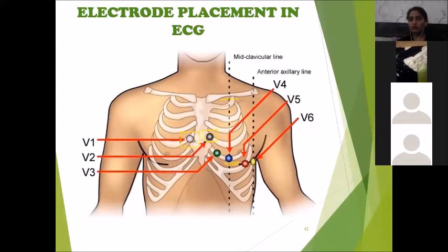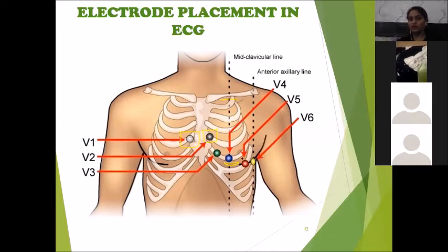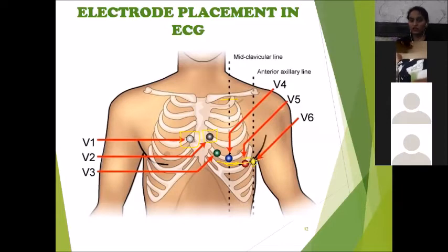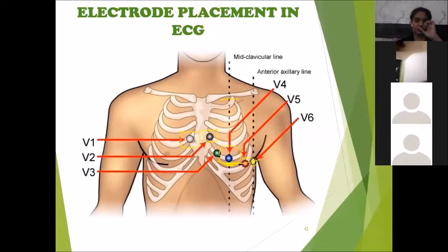V3 is placed in the center between V2 and V4. Two imaginary axillary lines are drawn — the anterior axillary line and mid-axillary line — and V5 and V6 are placed along these lines. All these leads are essentially at the same horizontal level, with V4 just below the nipple region.